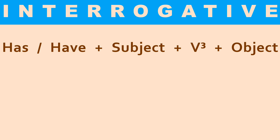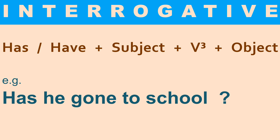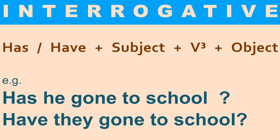Now see the interrogative sentence. In the interrogative sentence, we first use our helping verb, then subject, then third form of the verb, then object. The example: 'Has he gone to school?' or 'Have they gone to school?' So first you use the helping verb, then subject, then third form of the verb.